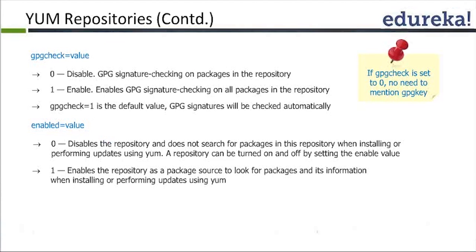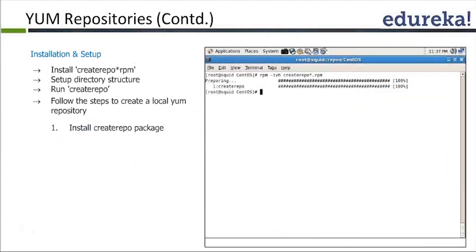Not every package you download from the internet will have a signature, which ensures the package is safe. If you simply do YUM install, it might go to online repositories and fetch from some location to install the package. If you want to ensure that whatever you install is safe, we can have GPG checks enabled.